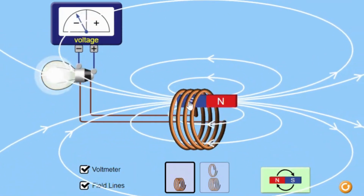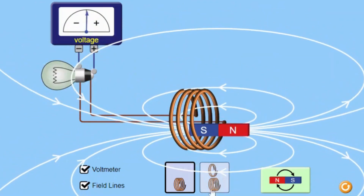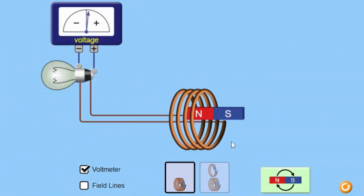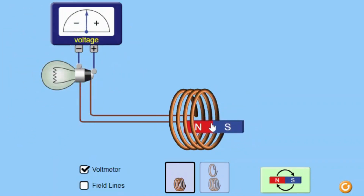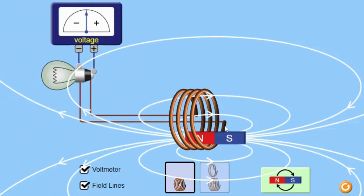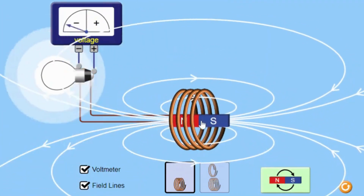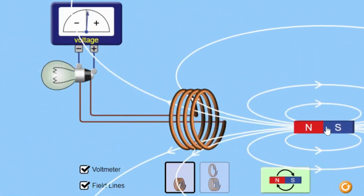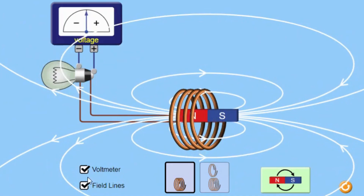A brighter bulb indicates a higher induced voltage, while a dimmer bulb indicates a lower induced voltage. When the number of turns in the coil is reduced by half but the speed of the magnet remains the same, the brightness of the bulb decreases. This is because the induced EMF is directly proportional to the number of turns in the coil. Reducing the number of turns by half reduces the induced EMF by half, resulting in a dimmer bulb.